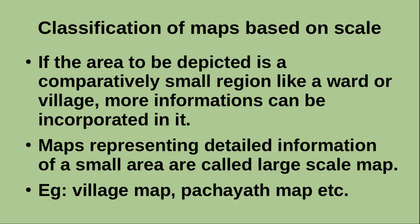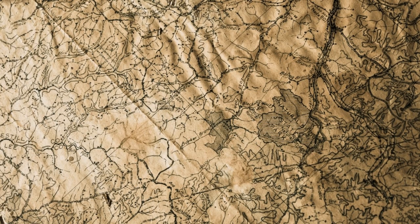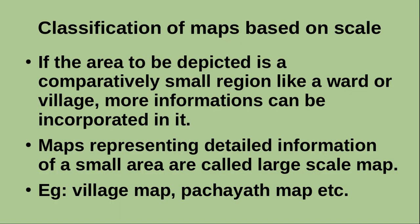If the area to be depicted is a comparatively small region like a ward of a panchayat or village, more information can be incorporated in it. Maps representing detailed information of a small area are called large scale maps. For example, village map, panchayat map, etc.